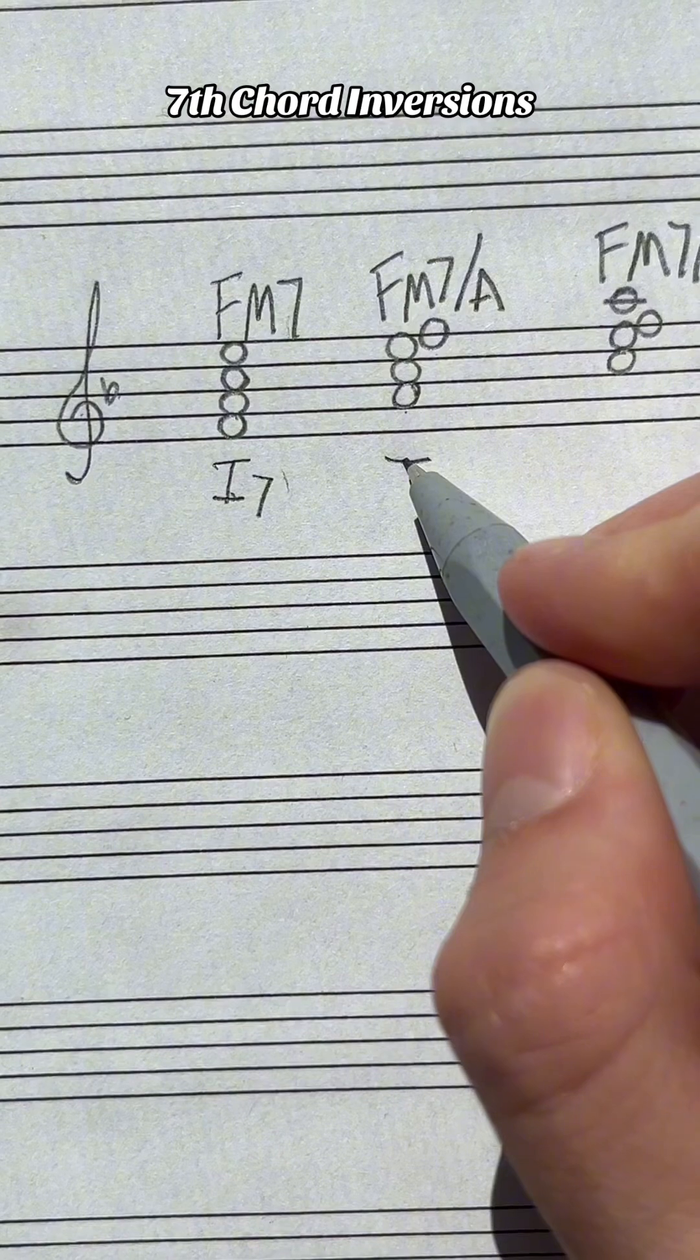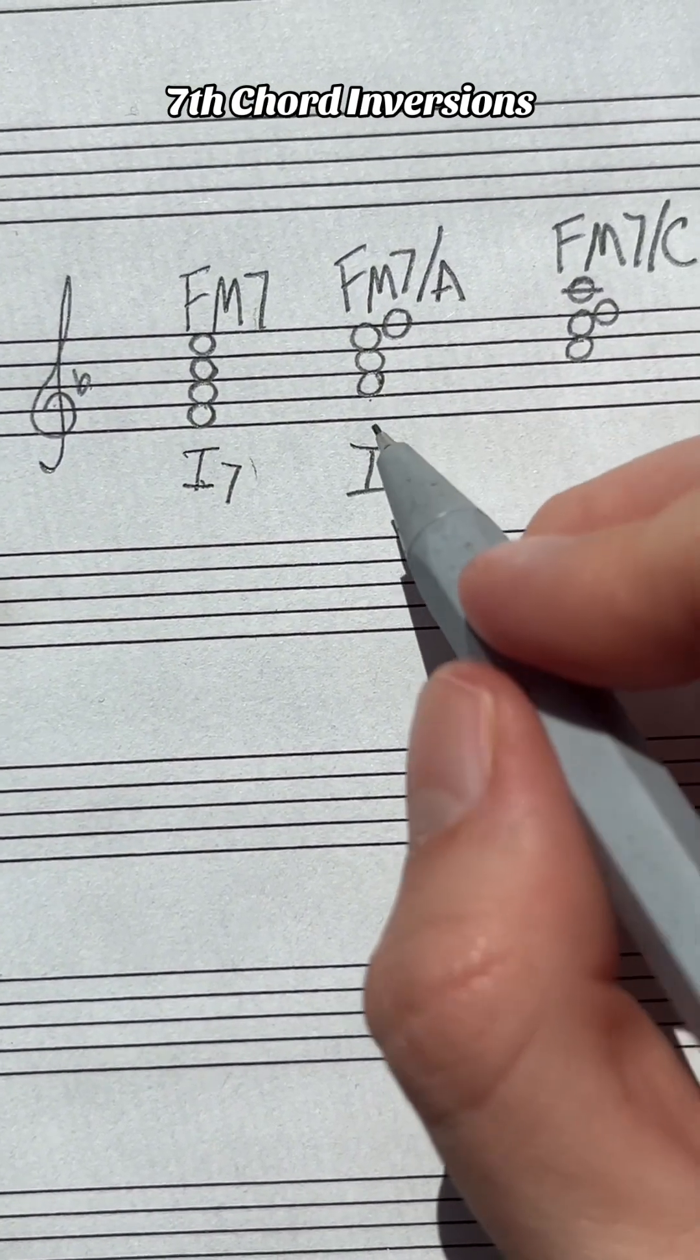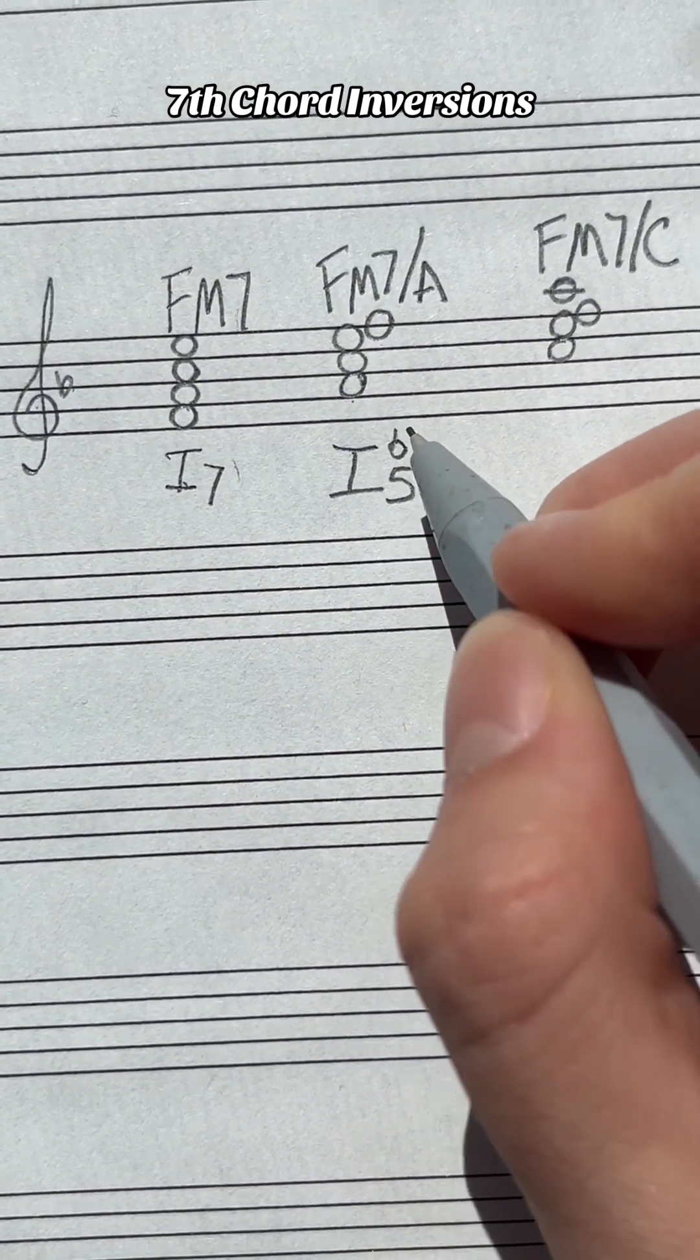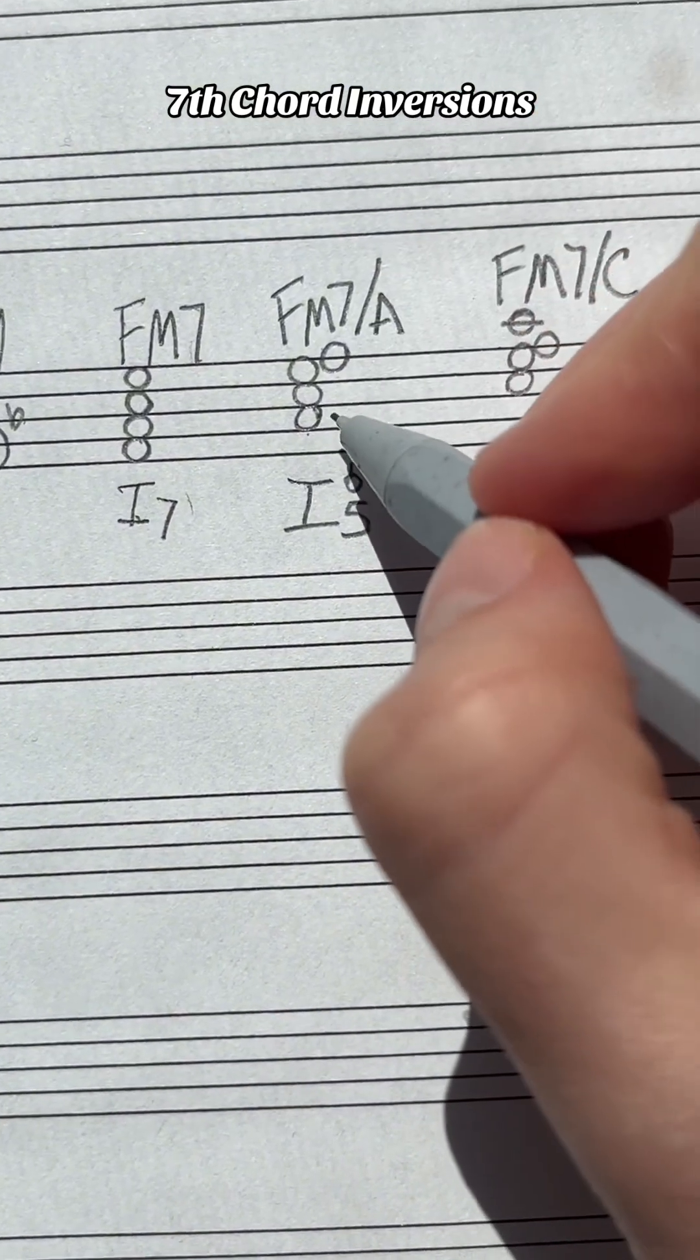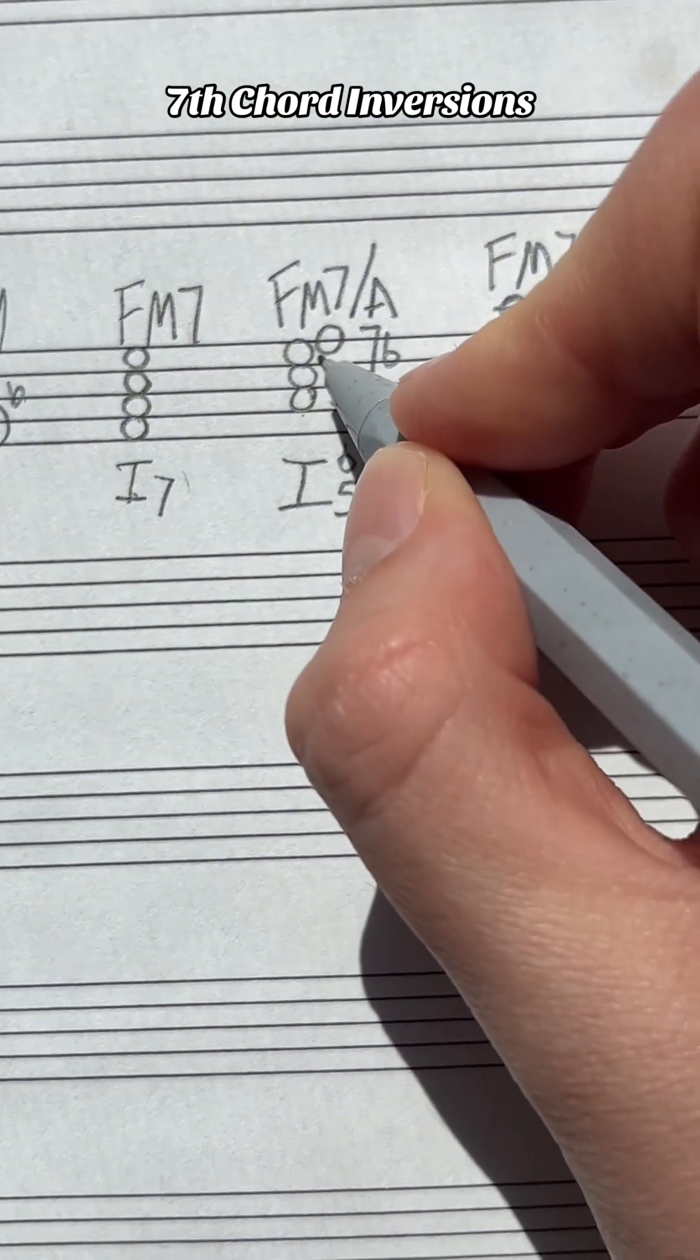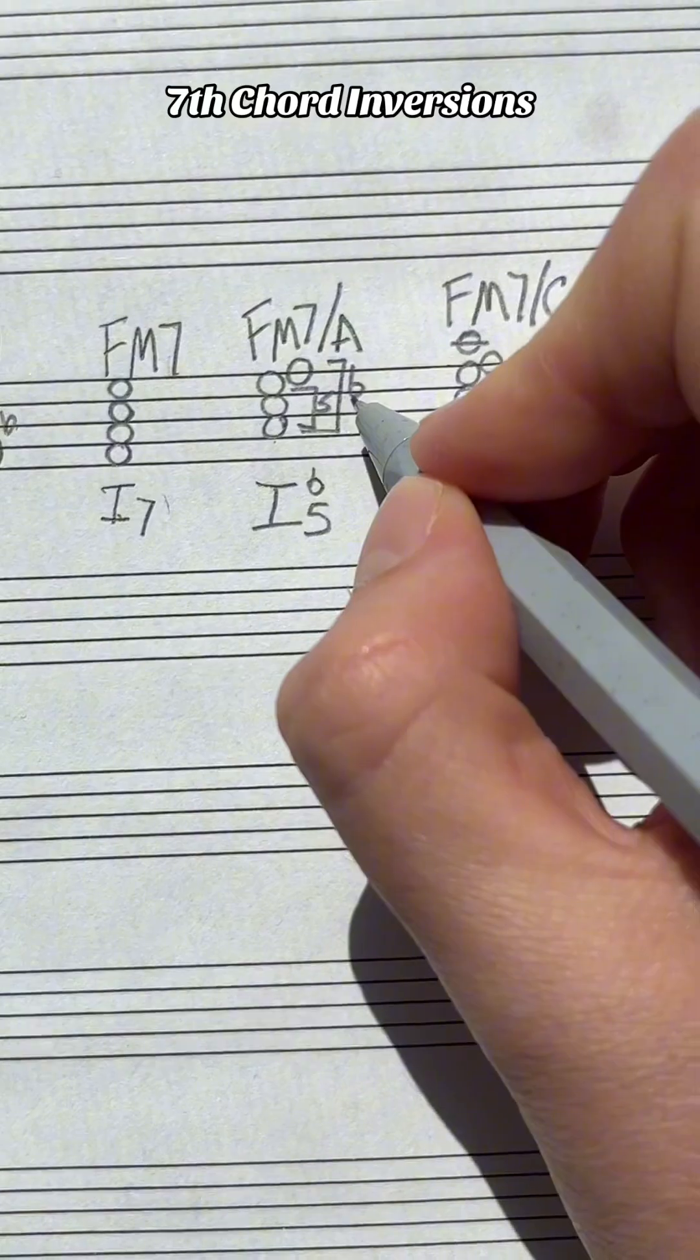Now we're going to express a seventh chord first inversion, and that's going to be 6-5. What is 6-5? From the bass, the lowest note, this interval is a sixth, this interval is a fifth, 6-5.